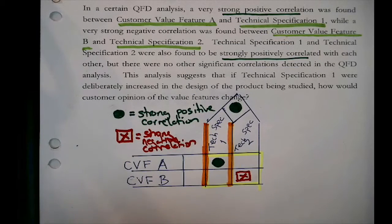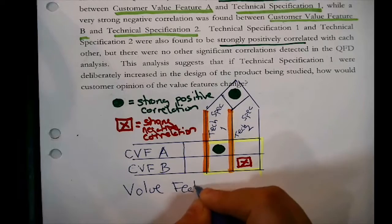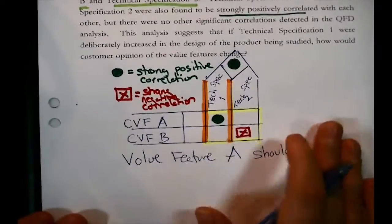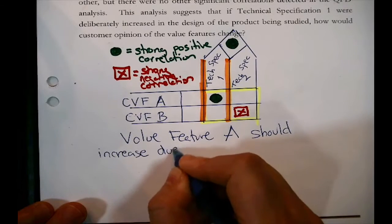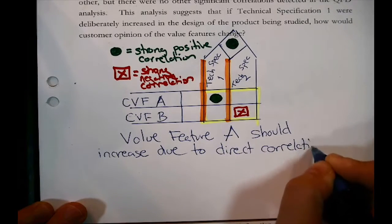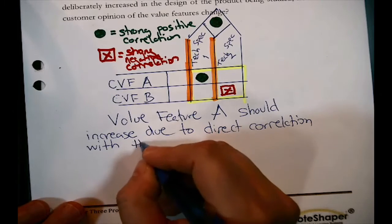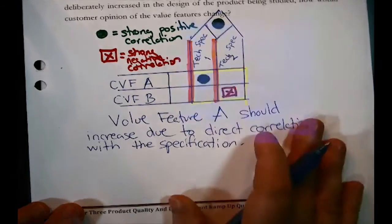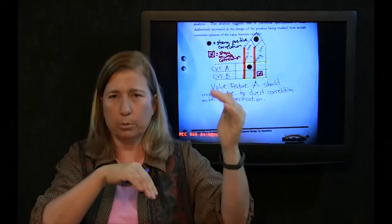Value feature A should increase due to its direct correlation with the specification. But our answer isn't quite finished. It's true that technical specification 1 is positively correlated with that feature, so when it goes up, so will that feature. But remember the gable — the pointy roof in the house of quality.